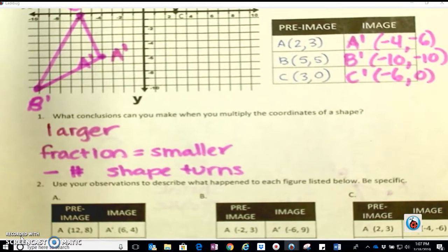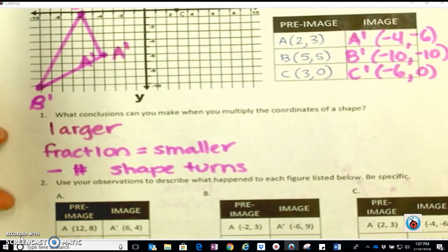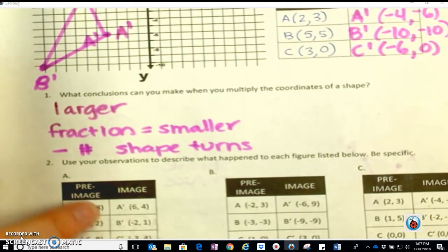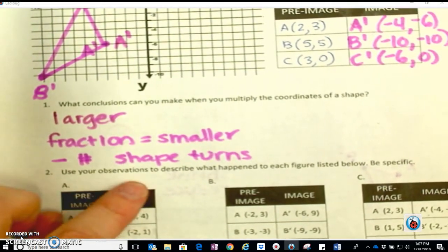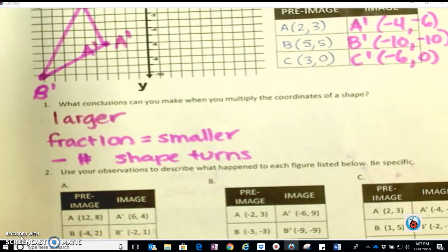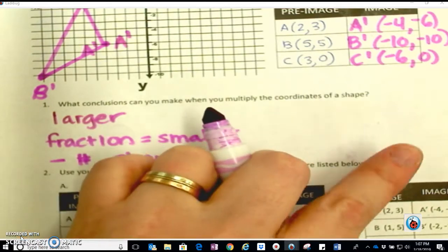Based on those observations that we just saw, let's take a look at what we think might've happened to these. It says use your observations to describe what happened to each figure listed below. Be specific.